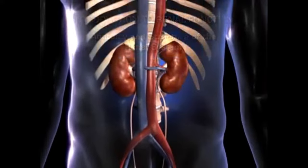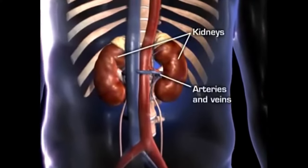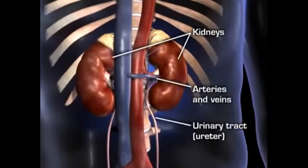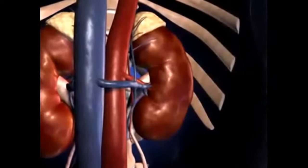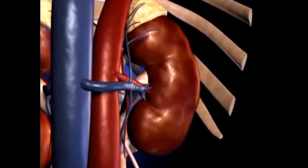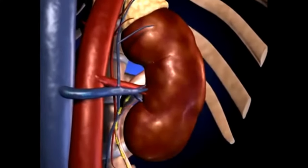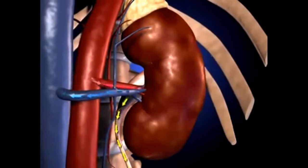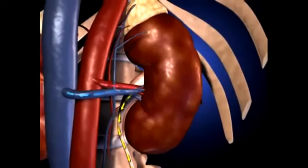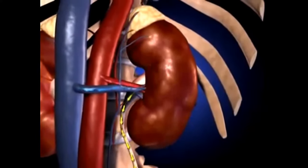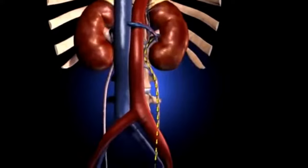The renal system consists of the kidneys, the connecting arteries and veins, and the urinary tract. The kidneys are paired bean-shaped organs lying outside the peritoneal cavity in the back of the upper abdomen, one on each side of the vertebral column. The kidneys function as the body's main excretory organs, eliminating metabolic waste products by filtering the blood. Substances that are unneeded or present in excess are filtered out of the blood and formed into urine.